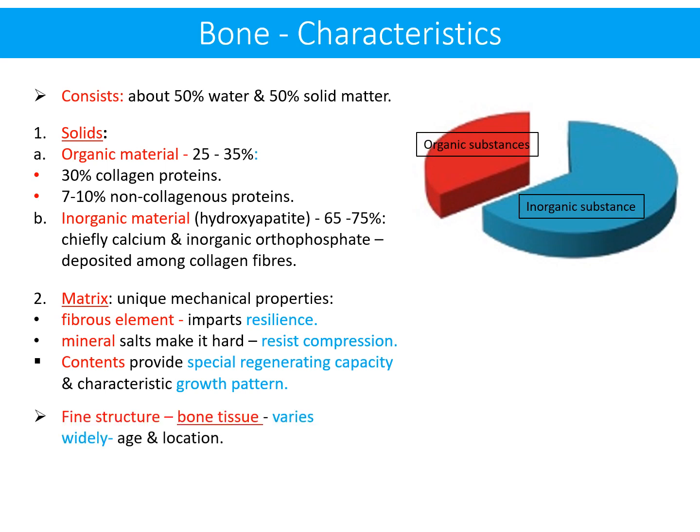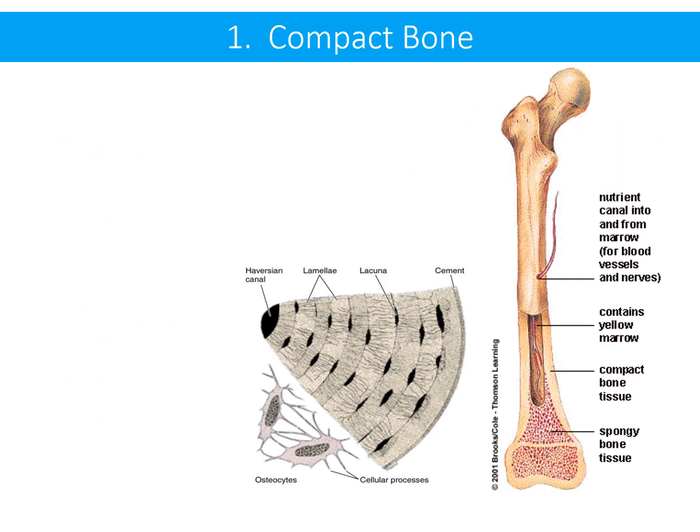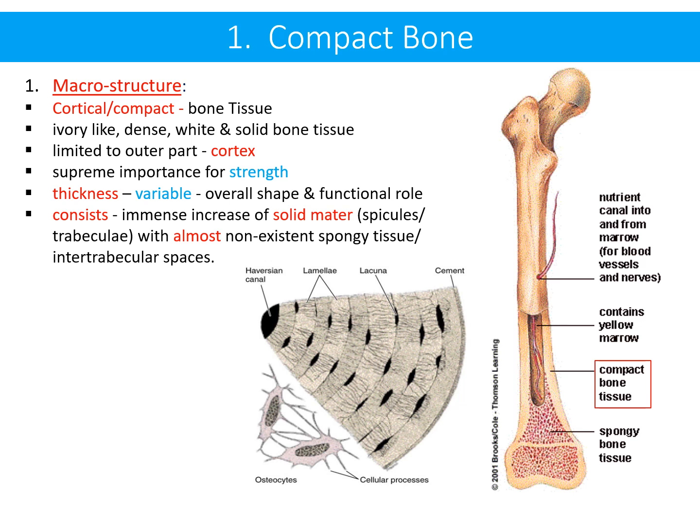The fine structure of bone tissue varies widely with age and location. Compact bone, macroscopically, appears as ivory-like, dense, white and solid bone tissue, limited to the outer part of the bone called the cortex. It is of supreme importance for the strength of the bone, and its thickness varies according to the overall shape and functional role of the bone.